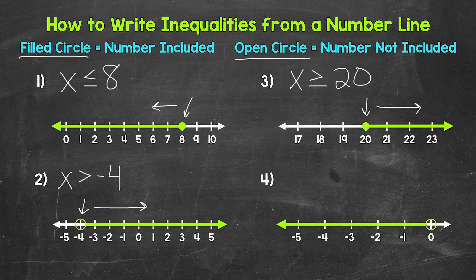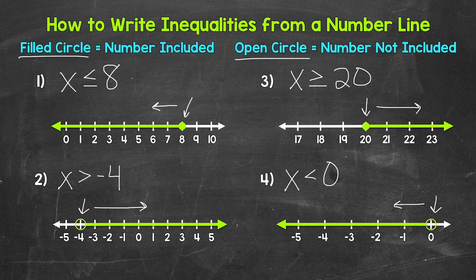And then lastly, number 4: we have an open circle at 0. So 0 is not a solution — it's not included. And then the arrow goes left, pointing towards all of the numbers that are less than 0. So x is less than 0.